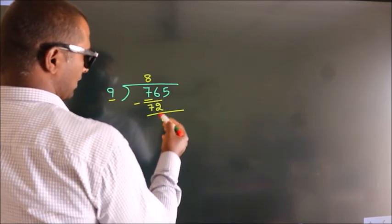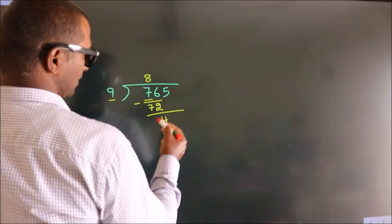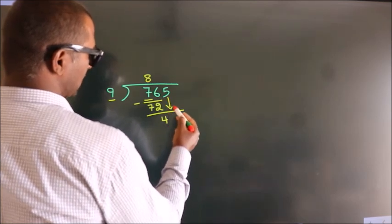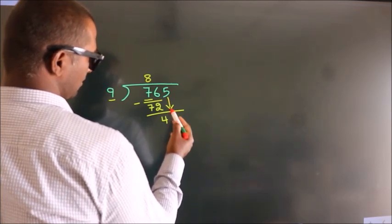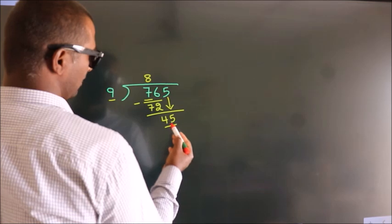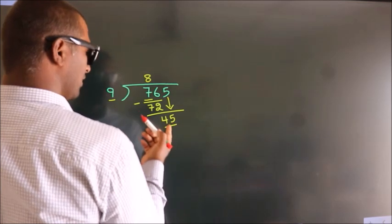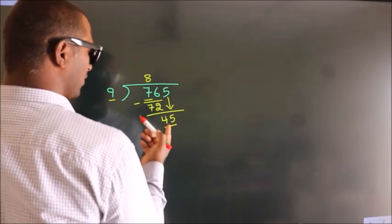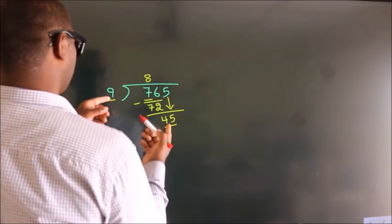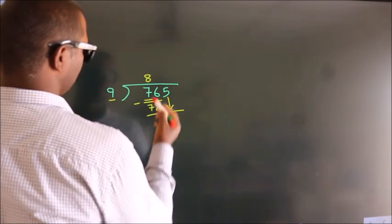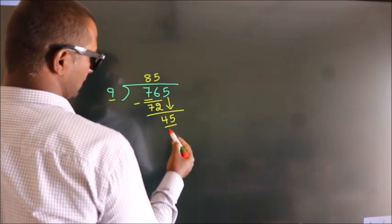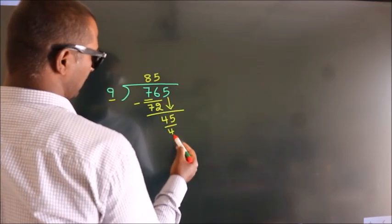After this, bring down the beside number. So 5 comes down, giving us 45. When do we get 45 in the 9 times table? 9 fives are 45.